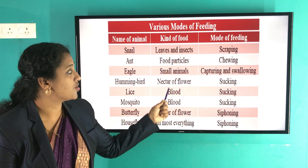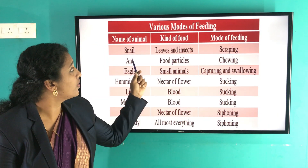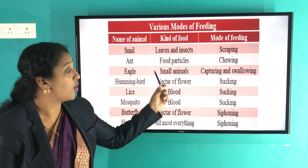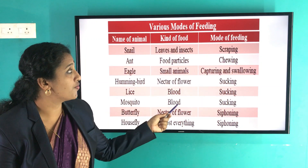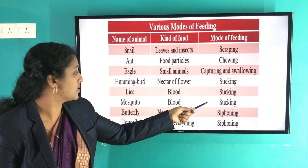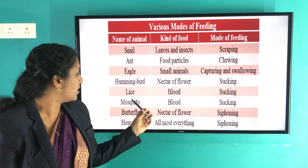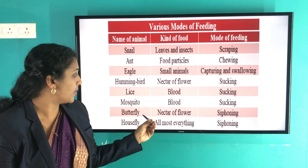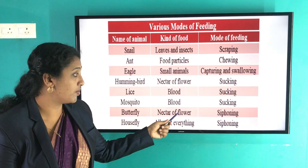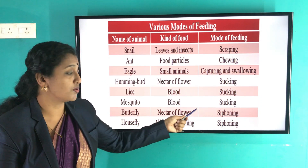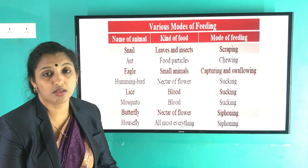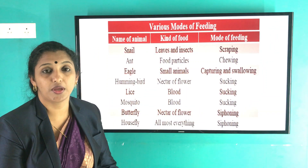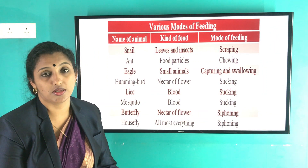As you can see from this table, different organisms take different kinds of food in different ways. For example, in the case of a butterfly, it takes nectar from flowers through a siphoning process. This table is present in your textbook on page number 11. You can copy it.